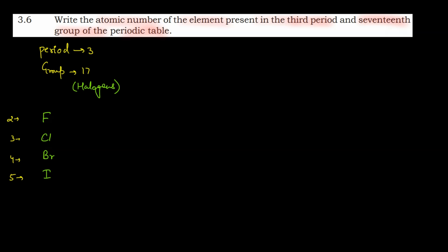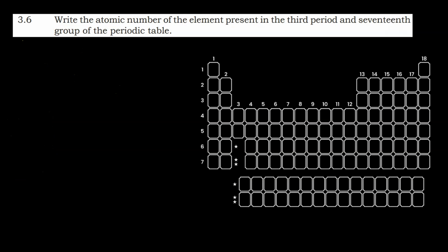In the third period, the element present in group 17 is chlorine. We can verify this using the periodic table. Starting from the beginning: hydrogen, helium, lithium, beryllium, boron, carbon, nitrogen, oxygen, fluorine, and neon. So fluorine is in the second period, which means chlorine is just below fluorine, followed by bromine and iodine.